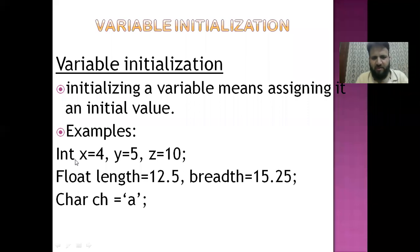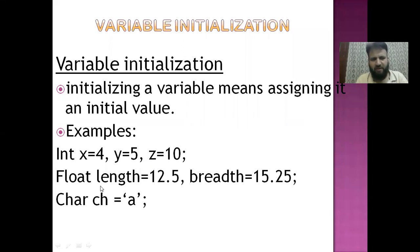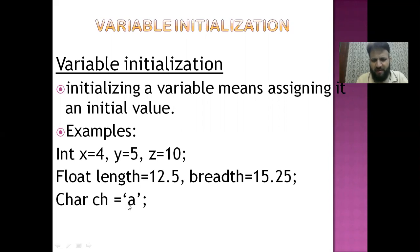For example, if the data type is integer, we assign integer values like 4, 5, and 10. If the data type is float — for float variables like length and breadth — we assign float values such as 12.5 and 15.25. And for a character variable, we assign alphabet characters.